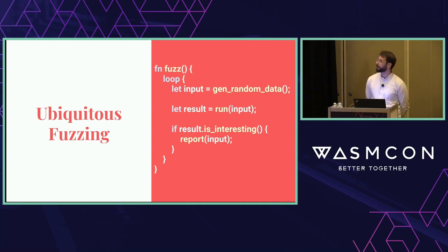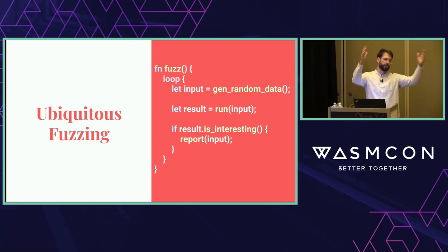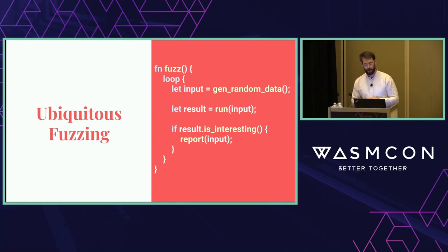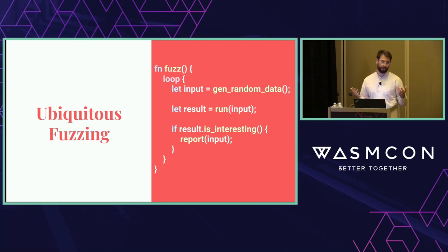Fuzzing is a software testing technique where we find security and correctness issues by feeding pseudo-random data as input into the system we're testing. We, the WasmTime project, love fuzzing. We do continuous fuzzing 24/7 in the background. We do targeted fuzzing when developing new features. We fuzz in the large — fuzzing all of WasmTime — but also in the small, like fuzzing a particular WebAssembly text format parser. Our pervasive use of fuzzing is probably the biggest single contributing factor to WasmTime's code quality. We fuzz because writing tests by hand, while necessary, is not enough — we inevitably miss edge cases.